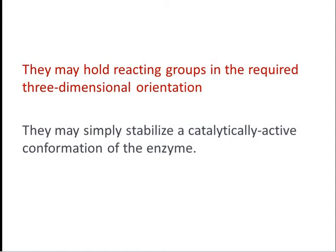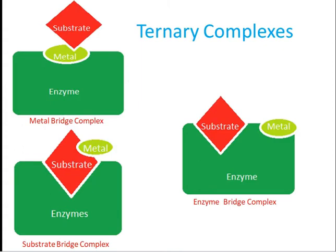Albert Mildvan in 1970 pointed out that the ternary complex formed between an enzyme, metal, and substrate may be an enzyme bridge complex (E–M–S), a substrate bridge complex (E–S–M), or a metal bridge complex (E–M–S where metal bridges enzyme and substrate).